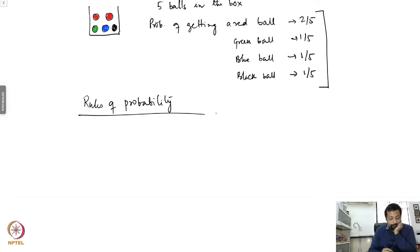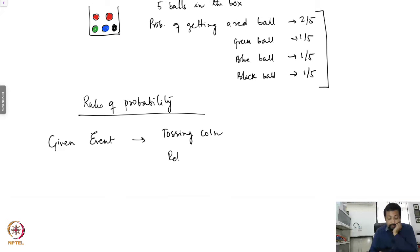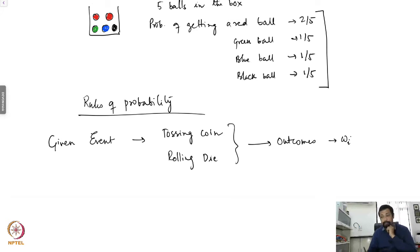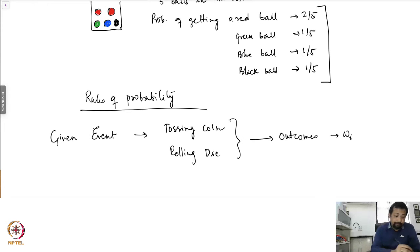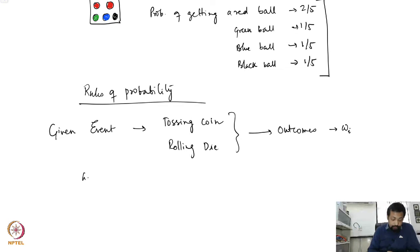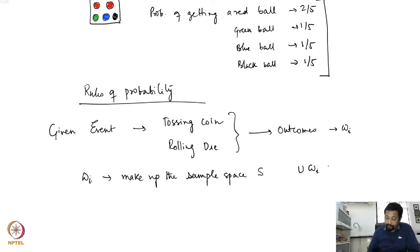For a given event — which could be like tossing a coin or rolling a die — there are outcomes. We will call these outcomes omega_i. These are the elements that we normally talk about. These outcomes make up what is called the sample space of the system. So these outcomes omega_i make up the sample space S, and we can write down that the union of omega_i equals S.